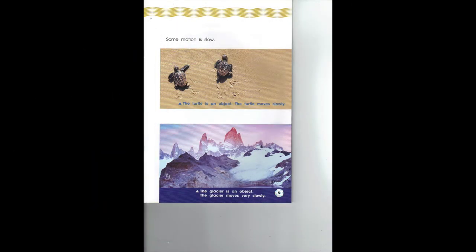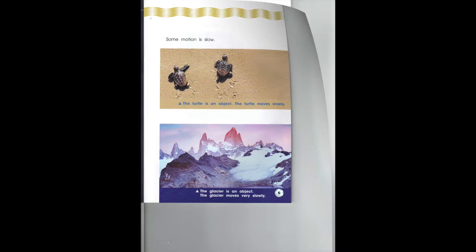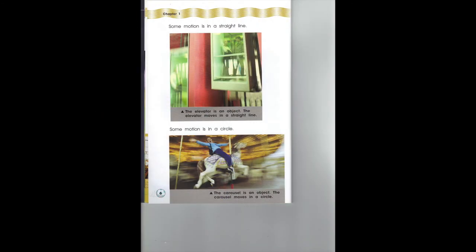Some motion is slow. The turtle is an object — the turtle moves slowly. The glacier is an object — the glacier moves very slowly. Some motion is in a straight line. The elevator is an object — the elevator moves in a straight line. Some motion is in a circle. The carousel is an object — the carousel moves in a circle.